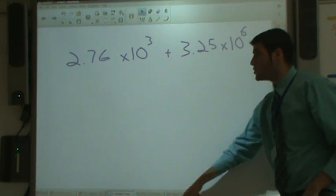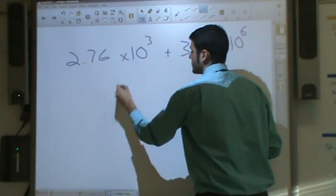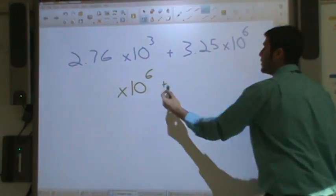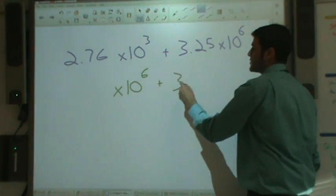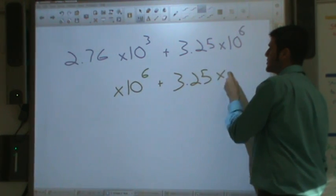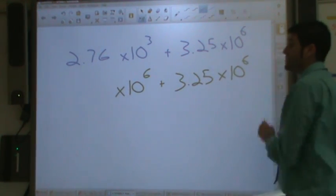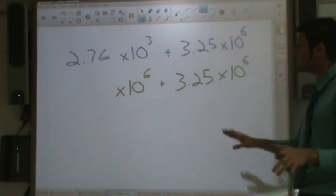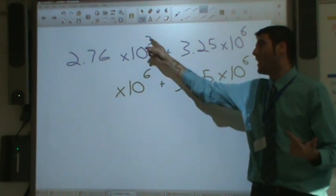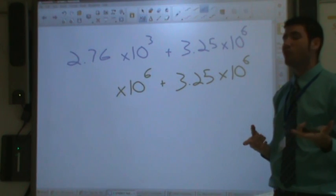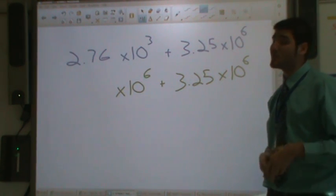So in order to do that, I'm just going to rewrite them. Times 10 to the sixth. Well since I'm not changing anything here, I can copy this one down exactly how it is. 3.25 times 10 to the sixth. I don't change it around. I don't play with it. This one I copied right down. However, this one over here, I did change it. I changed it from 10 to the third to 10 to the sixth.